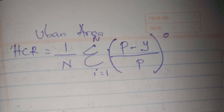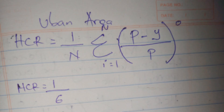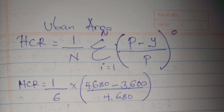We are asked to determine and interpret the head count ratio in both residences, so we start with the urban area. We state the formula: head count ratio equals 1 over n, times the summation of (p minus y) over p, to the power 0, times 100. We substitute: n equals 6 individuals. The poverty line p is 4,680, and the income of the first individual below the poverty line is 3,600, divided by 4,680, to the power 0.